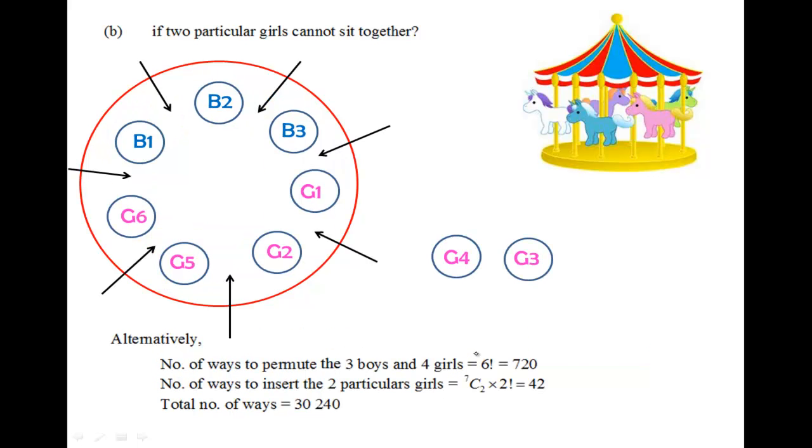There's an alternative method to solve this problem. The method is this. I'm going to bring out G3 and G4, supposing that they are the two girls that I can't place them together. So first, we permute the 3 boys and 4 girls, giving us 7 minus 1 factorial, which is 6 factorial.